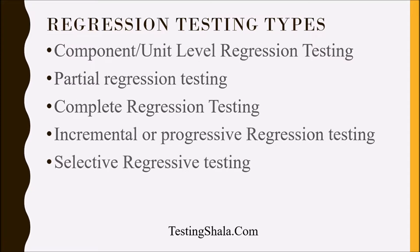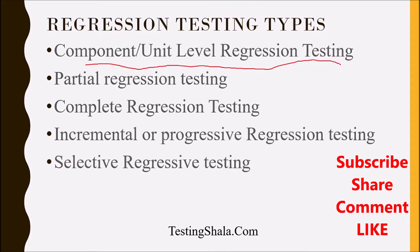The first regression testing type is component or unit level regression testing. This kind of regression testing is done at the component level when the developer is writing the components, just to ensure that the component level regression tests don't fail, because components will interact with each other.